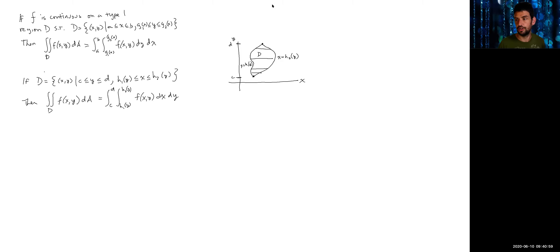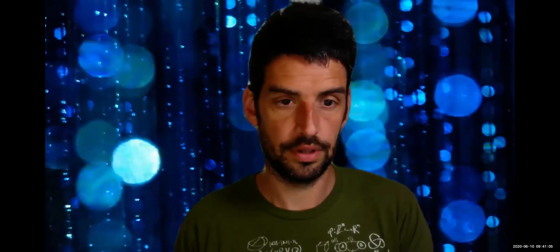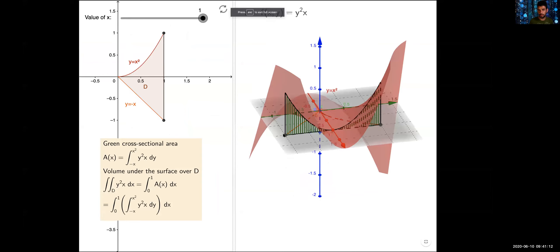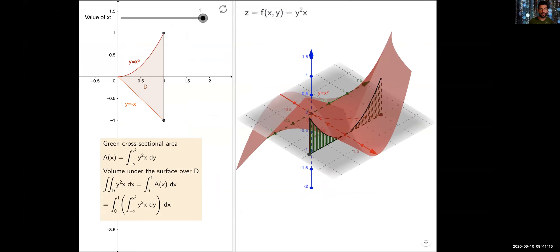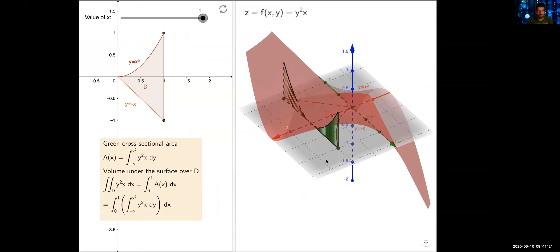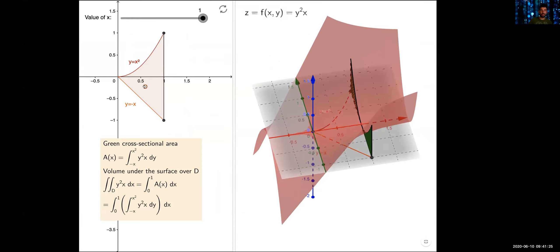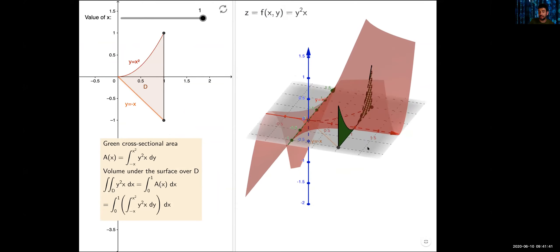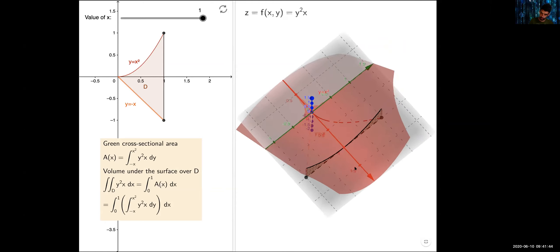There's a lot of notation, so let's look at a picture and then do an actual problem. Here's the function f(x,y) equals y² times x — the red surface is this function. The region D is between y equals negative x and y equals x squared, shown here in the xy-plane. Here you can see it in the three-dimensional picture — it's floating below the surface.